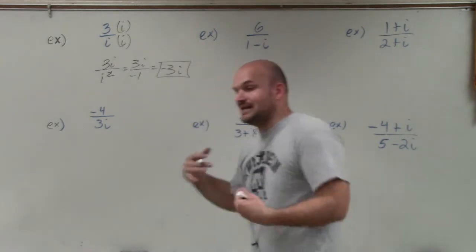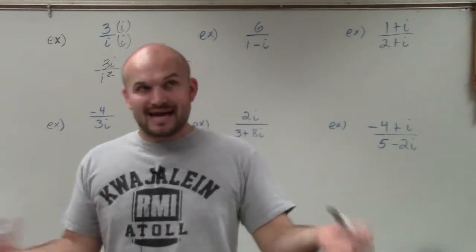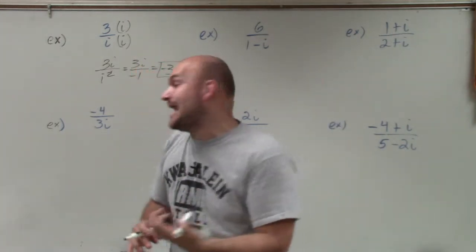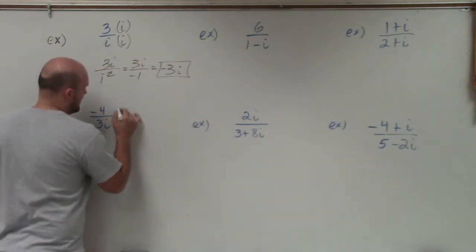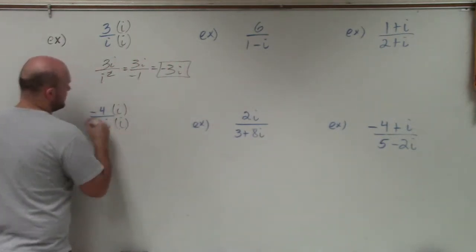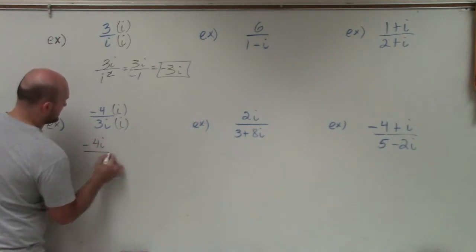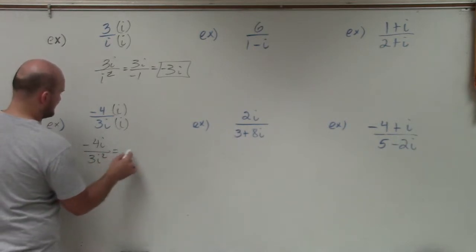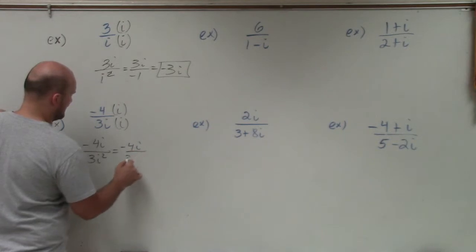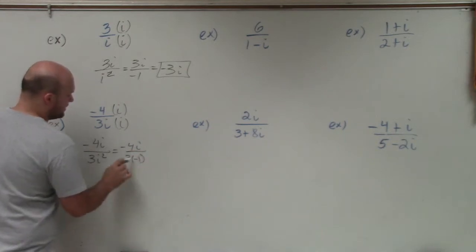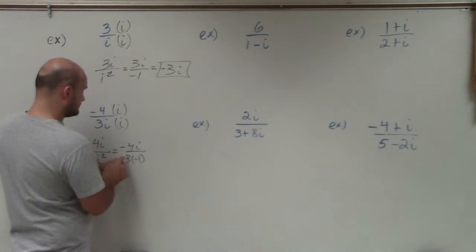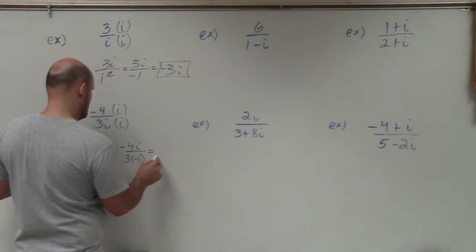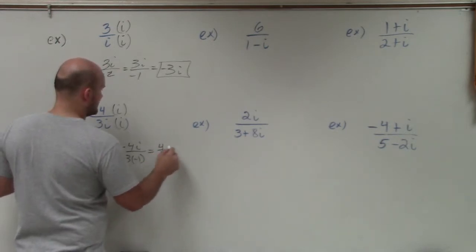Now for the next example — a lot of students say if they have 3i in the denominator they should multiply by 3i over 3i. You can, but it's more work because you'll have to reduce it. All we need is to get rid of the i, so just multiply by i over i. That gives us negative 4i divided by 3i squared, which is negative 4i divided by 3 times negative 1, which is negative 3. The negatives divide out, leaving us with positive 4i/3.